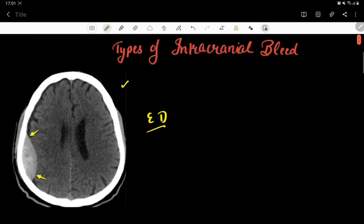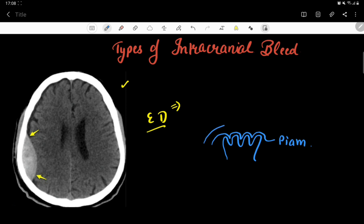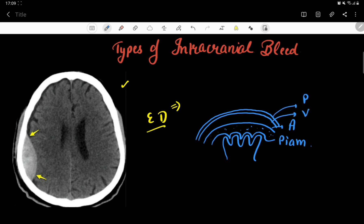Before discussing extradural hematoma, let's discuss the normal anatomy of the skull. This is the brain parenchyma, and above it there is the first layer that invaginates inside the gyri and sulci of the brain — this is the pia mater. Above the pia mater there is a continuous layer called the arachnoid, and between them is the subarachnoid space where cerebrospinal fluid is present. Above the arachnoid is the dura mater, which has two layers: the outer parietal layer and the inner visceral layer. The parietal layer is also called the endosteal layer because it is the periosteum of the overlying skull bones.